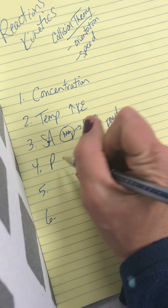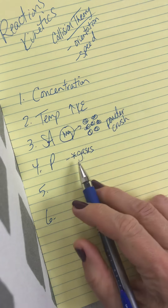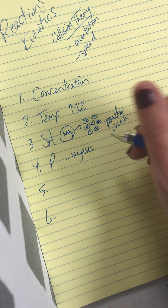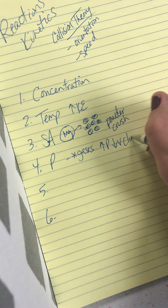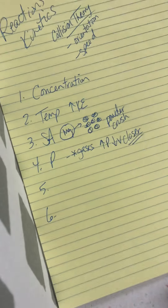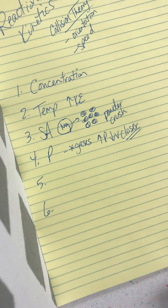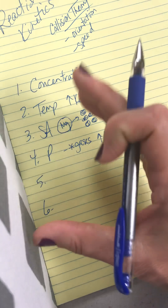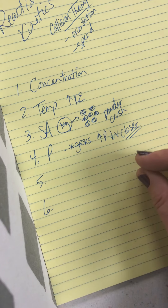Let's talk about pressure. Pressure is only going to affect gases because solids and liquids aren't affected by pressure — they're not compressible. But if you increase the pressure, you decrease the volume. That makes all the molecules closer to each other, which makes them more likely to collide. So if and only if you are dealing with a reactant that is a gas, you could speed it up by making the pressure higher so that the molecules are closer and more likely to collide.